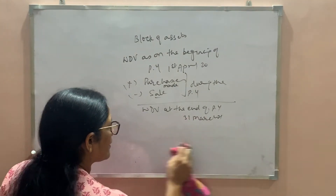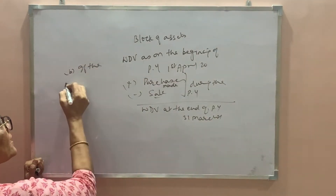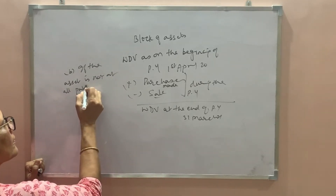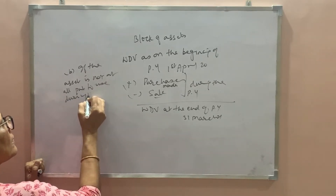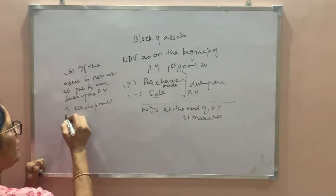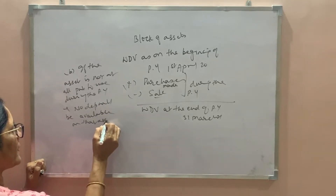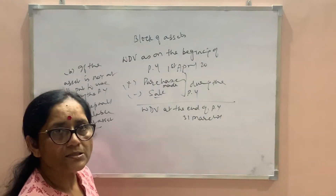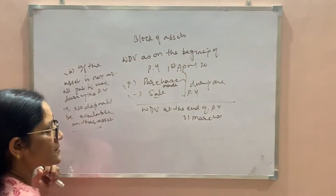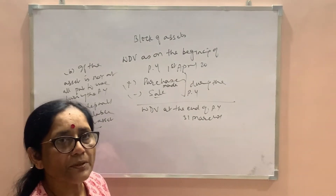If the asset is not at all put to use during the previous year, then no depreciation will be available on that asset. But these two conditions apply only to assets purchased during the previous year. In the next year, no such condition applies — the normal rate of depreciation will be available.